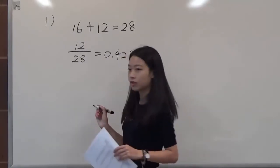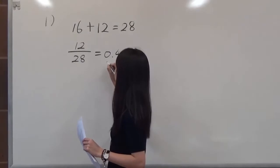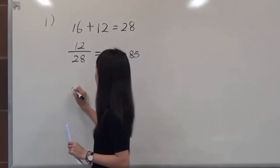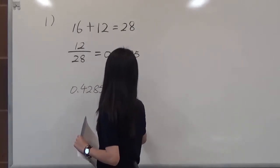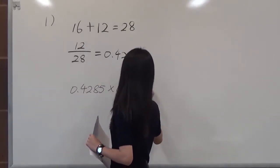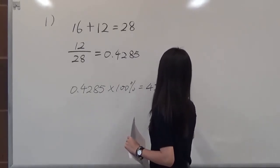Since we have to find a percentage, we have to use this number times 100%, which is 0.4285 times 100% equals 42.85%.